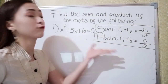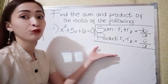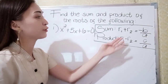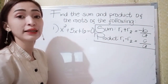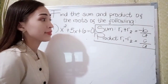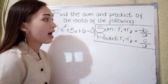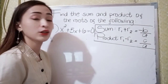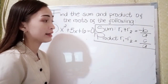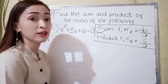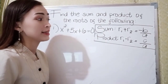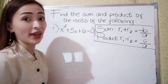We have here the formula for the sum. For the sum, we have root 1 plus root 2 is equal to negative b over a. And then for the product, we have root 1 times root 2 is equal to c over a.